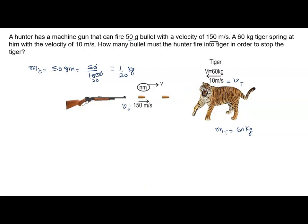The logic here is conservation of momentum. The momentum the tiger has gained must be equalized by the bullets. First, let's find the momentum of the tiger: mass of the tiger times velocity of the tiger, which is 60 times 10 equals 600 kilogram meters per second.